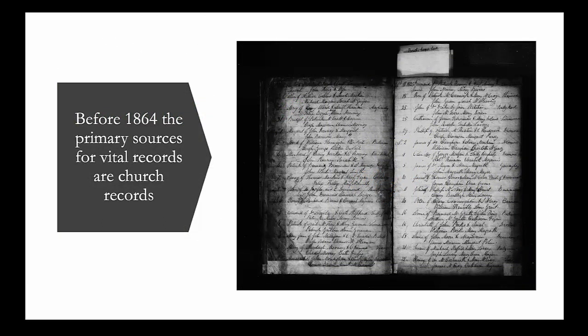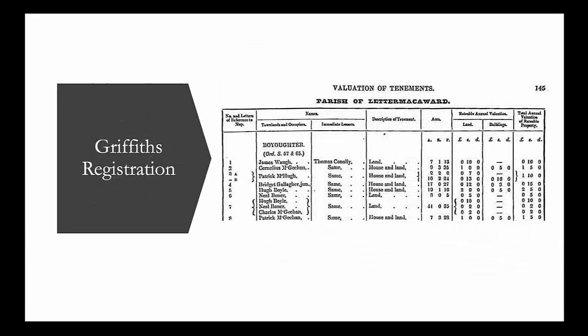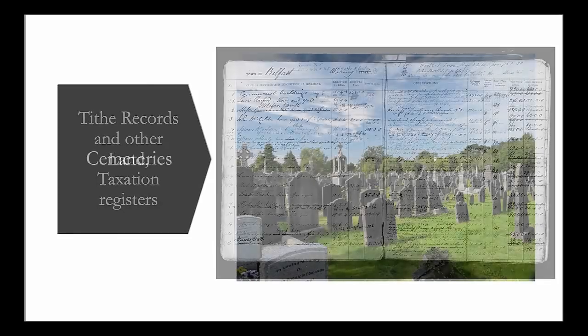Genealogical records in Ireland are mainly divided into those before and after 1864, the beginning date of civil registration in Ireland. Before 1864, the primary sources for vital records are church records. Other available sources include census fragments where they exist, civil registration for Protestant marriages from 1845 to 1863, the Griffith's Valuation carried out between 1848 and 1864 to determine tax liability with detailed information about where Irish people lived in the mid-19th century, tithe records of what was paid to support the Church of Ireland, and other land and tax registers and cemetery records.